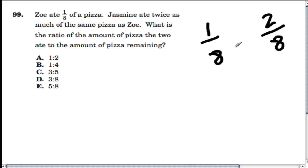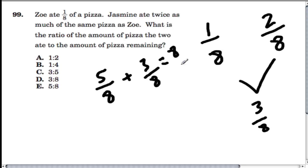What is the ratio of the amount of pizza the two ate to the amount of pizza remaining? Together they ate three-eighths of the pizza, which means five-eighths was not eaten because five-eighths and three-eighths, that's all eight slices.